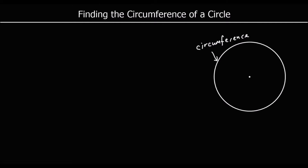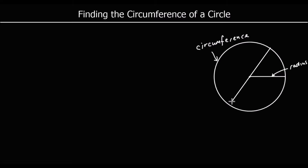We call a line from the centre to the circumference of the circle a radius. And we call a line from one side — from the circumference to the circumference, one side to the other, going through the centre — we call that a diameter.